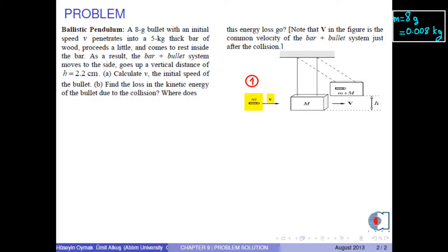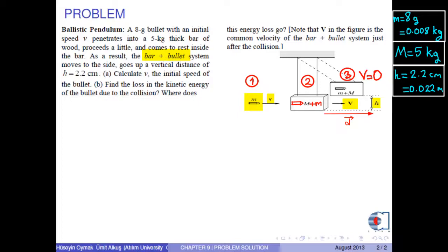An 8 gram bullet with an initial speed V penetrates into a 5 kg thick bar of wood, proceeds a little, and comes to rest inside the bar. As a result, the bar plus bullet system moves to the side and goes up a vertical distance h of 2.2 cm. Calculate V, the initial speed of the bullet.